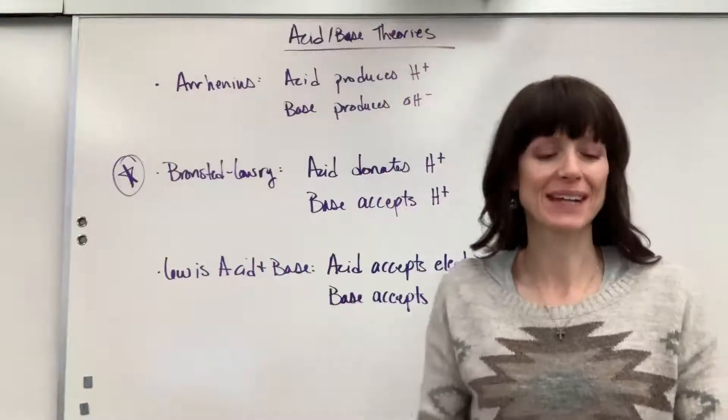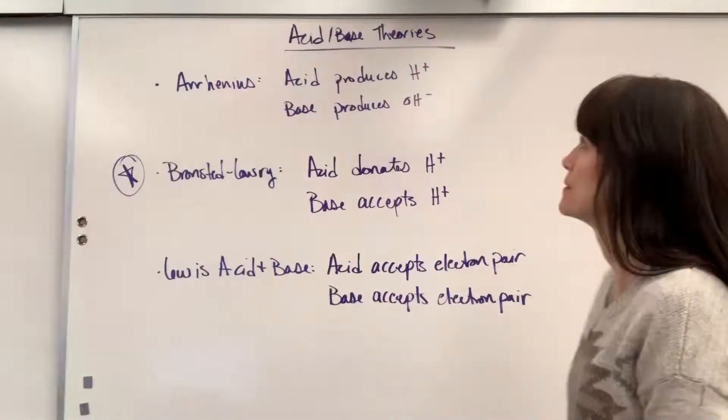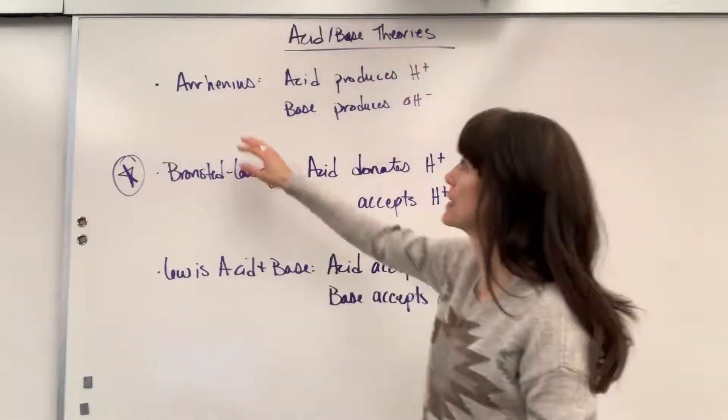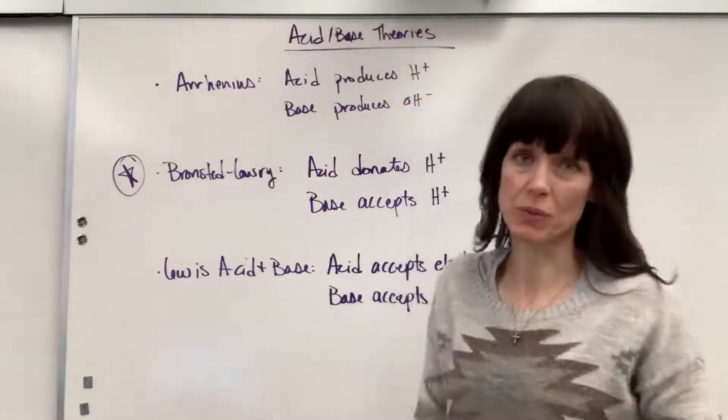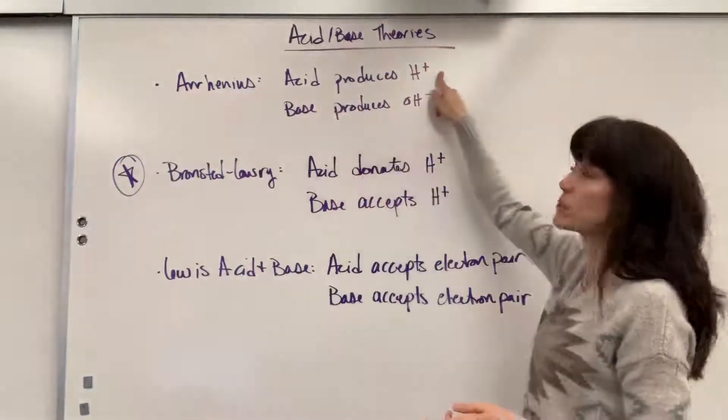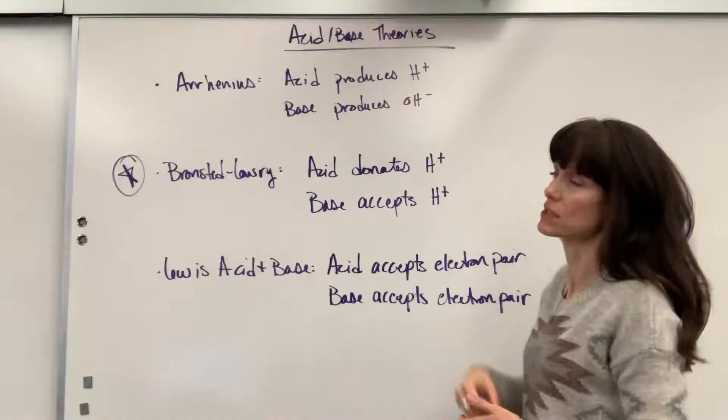Hi, kind of exciting. We're going to talk about acids and bases. So our three theories of acids and bases. The first theory came from Arrhenius and this is in the 1800s. Super simplistic, if you will. He said that an acid produces a hydrogen and a base produces a hydroxide.